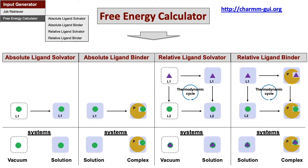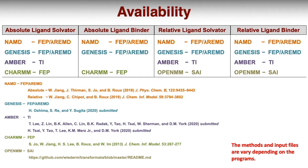The four modules can generate NAMD and GENESIS inputs using the Free Energy Perturbation and Lambda Replica Exchange MD methods.